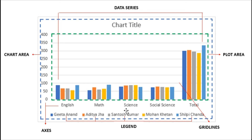Next are the grid lines. You can see there are horizontal grid lines and vertical grid lines drawn across the entire chart area — these are called grid lines. So these are the various components of a chart in MS Excel.